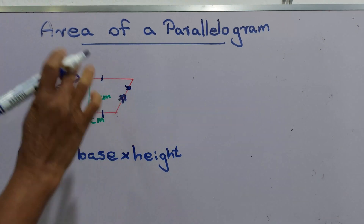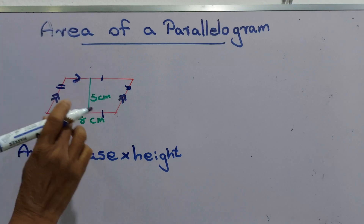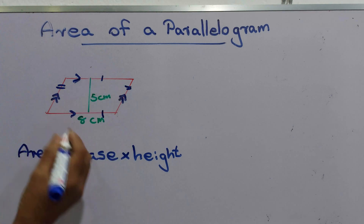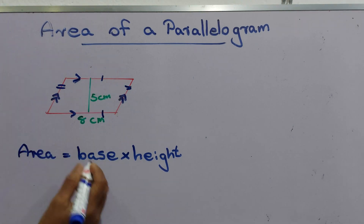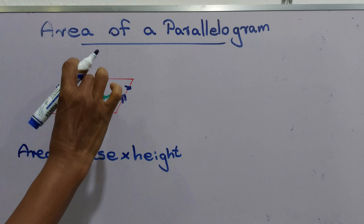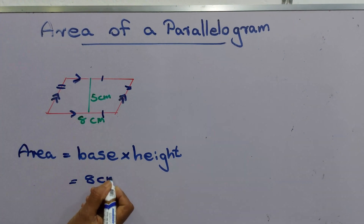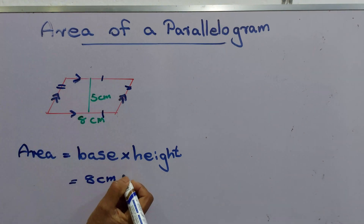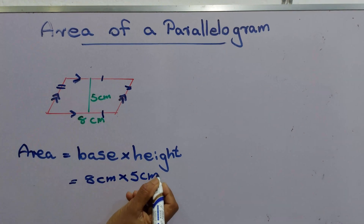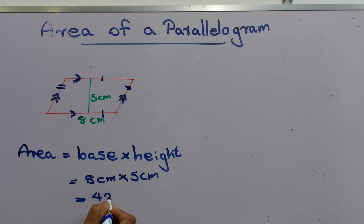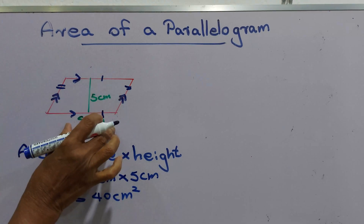Now we are going to find out the area of a parallelogram. This is a 2D shape. We are going to find the area as base into height. Here the base is 8 cm and the height is 5 cm. We multiply these two: 8 into 5 equals 40 square centimeters. That is the area of this parallelogram.